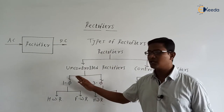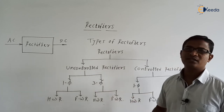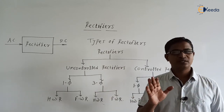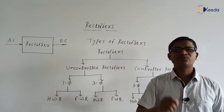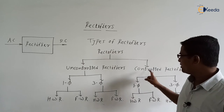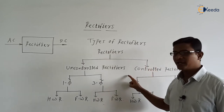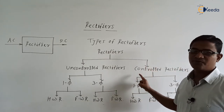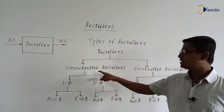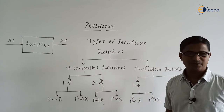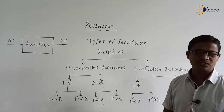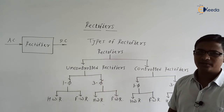The difference between the uncontrolled rectifier and the controlled rectifier is very small. If we make the firing angle of the controlled rectifier equal to zero, then it will behave as an uncontrolled rectifier. We are going to discuss this in detail.